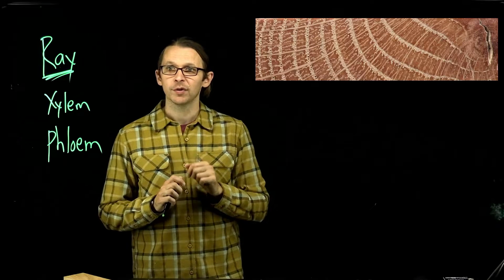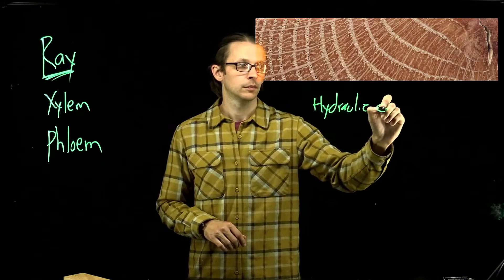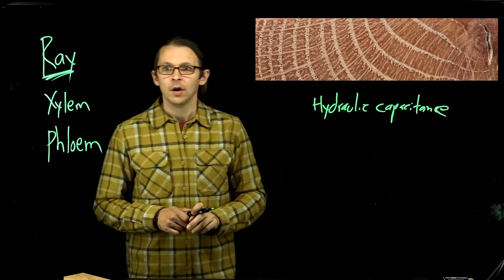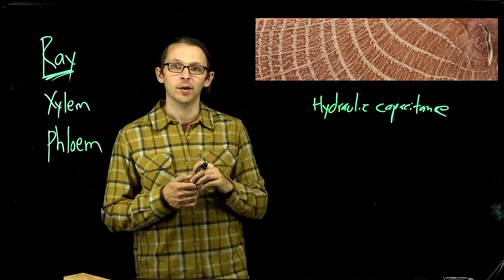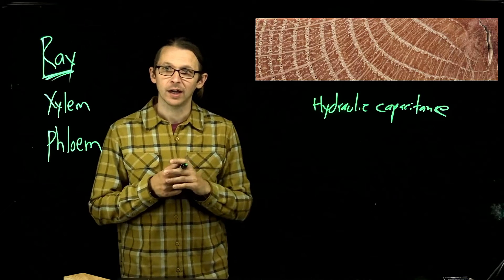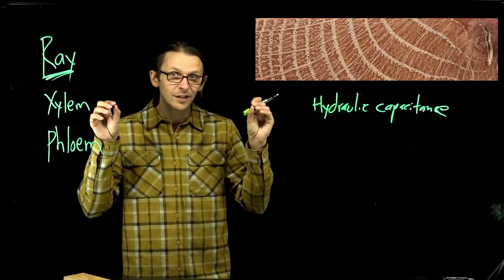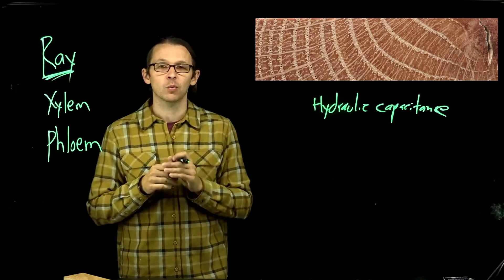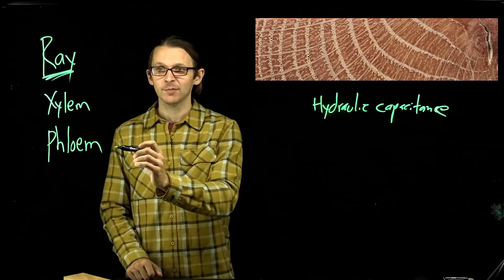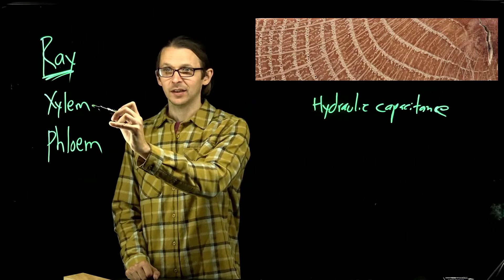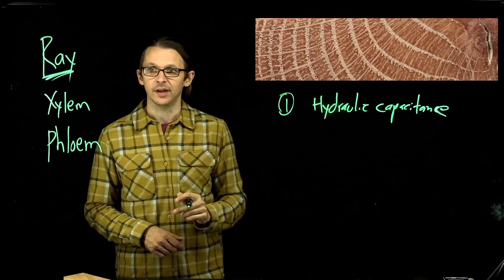The rays also provide the hydraulic connection to give hydraulic capacitance to our xylem. Early in the morning, when the sun comes out and it's bright and dry in the atmosphere, there's a large hydraulic demand pulling water up the tree. Trees often meet that intense hydraulic demand by using water stored within the stem and often within the bark of that tree. It gets sucked out of the bark and into the xylem, supporting water movement up the stem. That water is then recharged through root uptake — literally moving from the bark to the xylem via the interconnected rays.